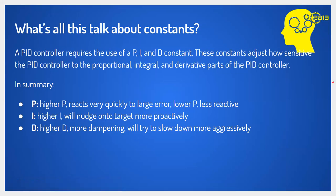A PID controller requires a P, an I, and a D constant, and these constants are doubles — any positive number. They adjust how sensitive the PID controller is to each part. The greater the P, the more it reacts to large errors; the lower the P, the less reactive. The greater the I, the more proactively it nudges toward the target. The higher the D, the more damping — it slows down more aggressively. A good note: if you increase any of these too high, you'll cause oscillations or erratic behavior, so very careful tuning is involved.